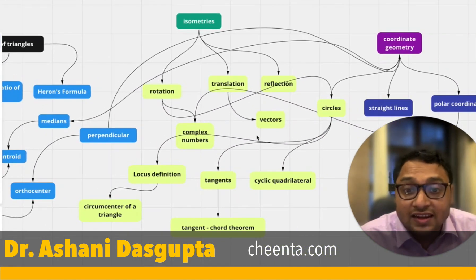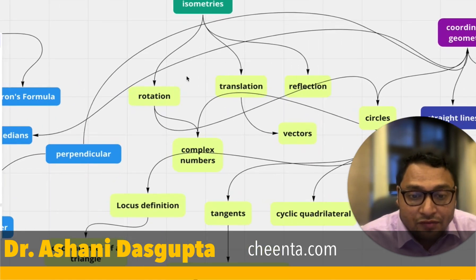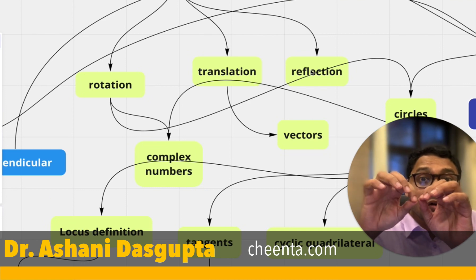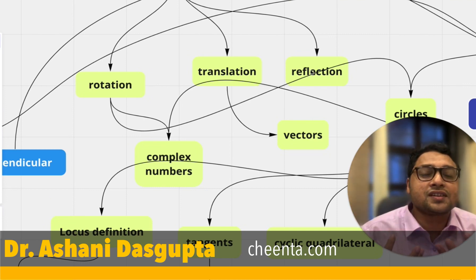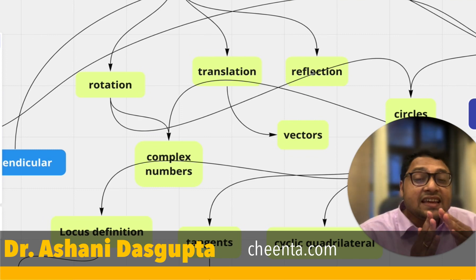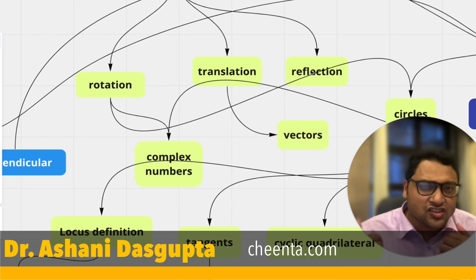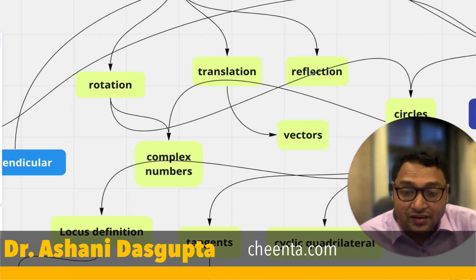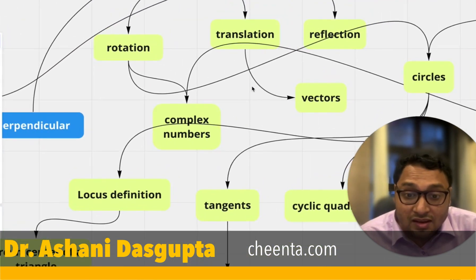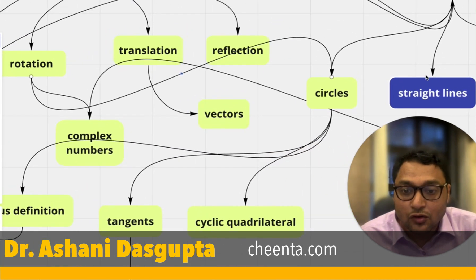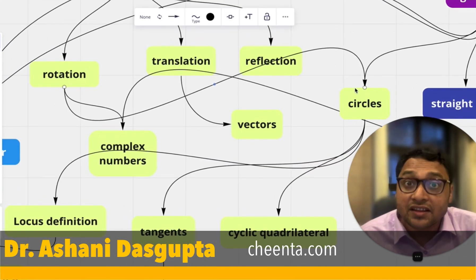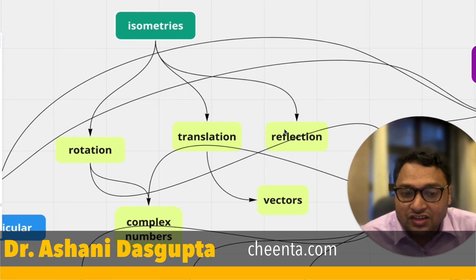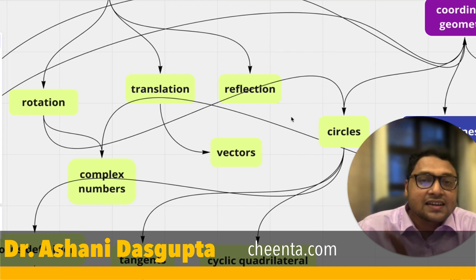The next main chunk is isometries. We start with three types: rotation, translation, and reflection. Once you learn rotation, you can also talk about complex numbers. Though complex numbers are not explicitly tested in AMC 10, they are immediately tested in AMC 12, so at Jinta courses we introduce complex numbers even at the AMC 10 level. Once you learn rotation, you can also learn circles, since rotations and circles are very intimately related. Once you learn translation, you can learn about vectors. Reflection is a different subunit on its own.